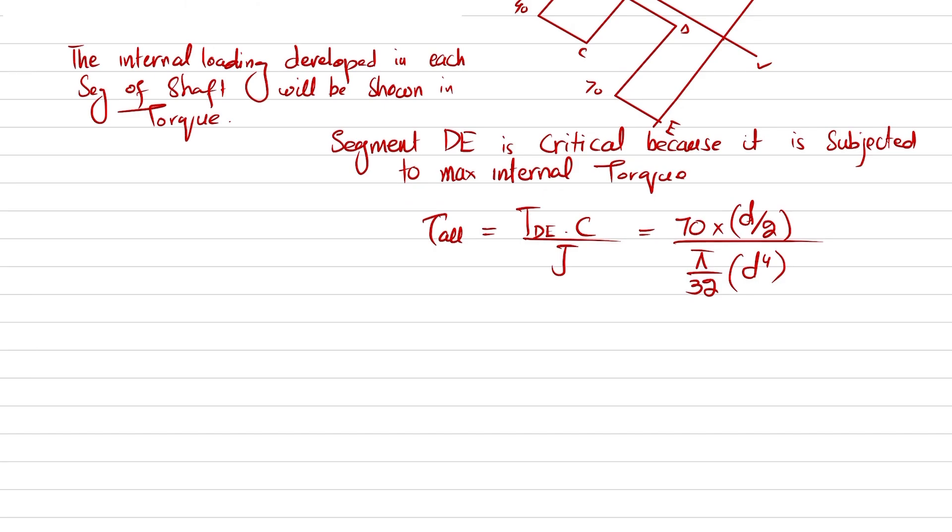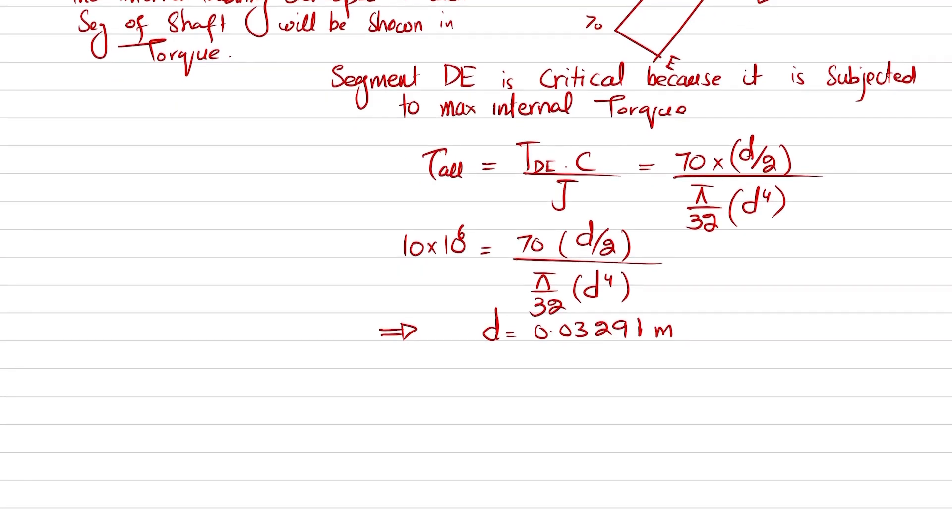τ_allowable is 10 × 10^6 pascals, so 70 times d divided by 2, divided by π/32 d^4. Now it's very easy; you can solve it and you will get d equal to 0.03291 meters, or this d in terms of millimeters will be equal to 32.91 millimeters. If you round it, it will be equal to 33 millimeters.